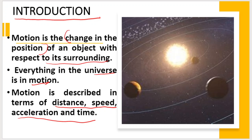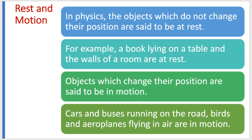Different types of motions are available. Now, what is rest and what is motion? Motion is the opposite of rest. Objects which do not change their position are said to be at rest. Examples: walls of the room, a book lying on a table.